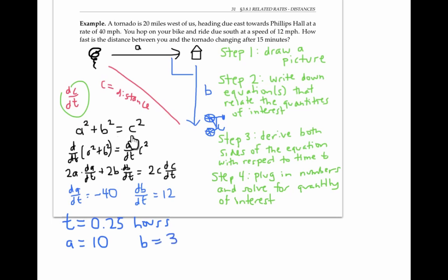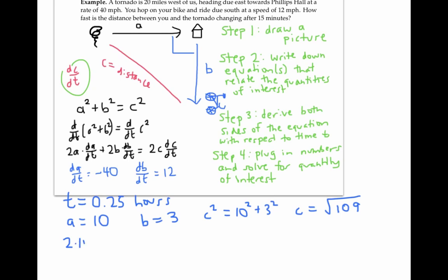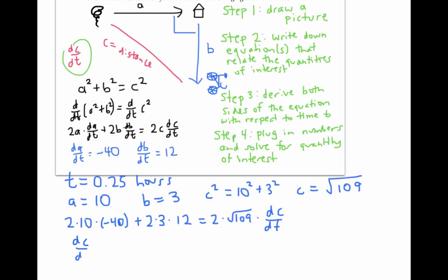Now using the same equation we started with, we can plug in a and b and solve for c. We know that c squared is going to be 10 squared plus three squared. So c is going to be the square root of 109. Plugging the numbers into this equation, we get two times 10 times negative 40, plus two times three times 12, equals two times the square root of 109 times dc/dt. So dc/dt is going to be negative 800 plus 72 over two times the square root of 109, which is approximately negative 35.